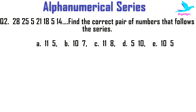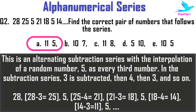Next example: find the correct pair of numbers that follows the series 28, 25, 5, 21, 18, 5, 14, __, __. The options are: A) 11, 5; B) 10, 7; C) 11, 8; D) 5, 10; or E) 10, 5. The right option is A: 11, 5. This is an alternating subtraction series with the interpolation of the random number 5 as every third number in the series.